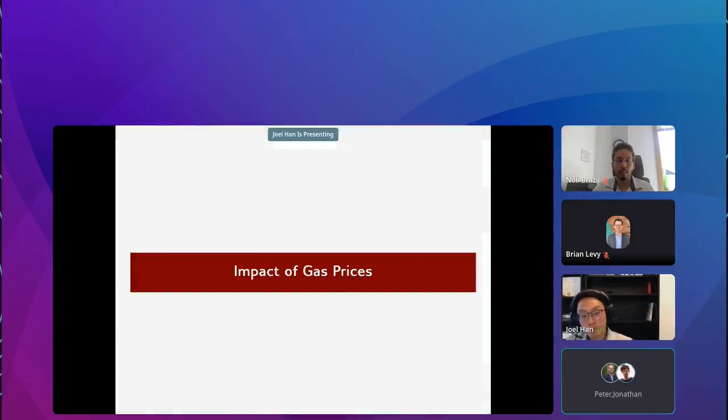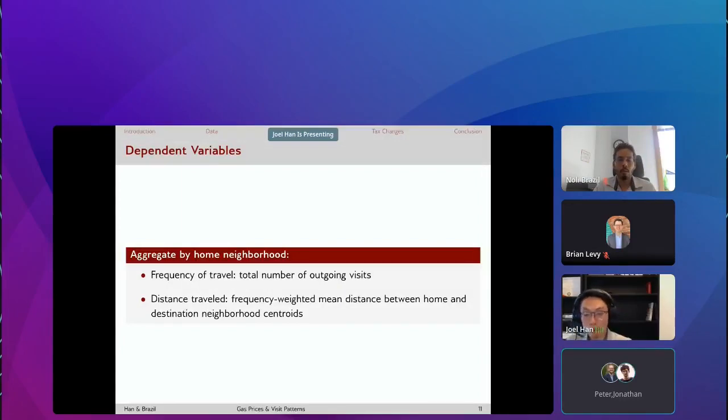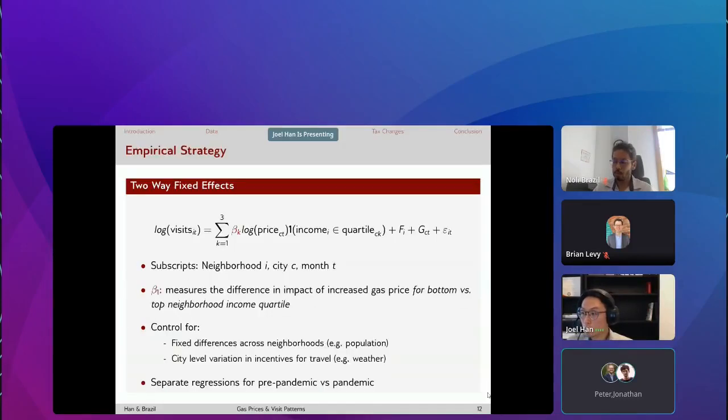First we're going to describe the impact of gas patterns on these income disparities. We create our dependent variables by aggregating for each home neighborhood, the total number of outgoing visits from that neighborhood. This is our measure of the frequency of travel. Using the spatial nature of this data, we can actually derive a measure of mean distance traveled. We look at the home and destination neighborhood block groups, their centroids and we take the distance. We take these distances and weight them by the frequency of visits between these neighborhoods.